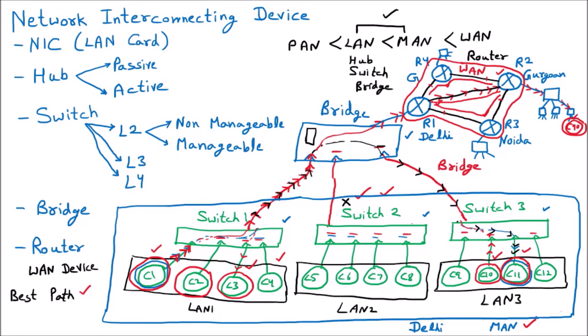Best path means the router finds the best path depending on the situation. For example, if I want to go from Delhi to Gurgaon, there may be a shorter path with two toll bridges costing a thousand rupees each, and a longer path with no toll. If price is my priority I take the longer path; if time is my priority I take the toll. All this decision making is done by the router based on various parameters.